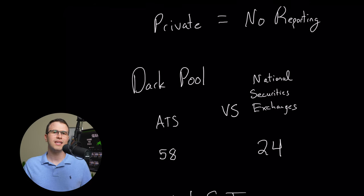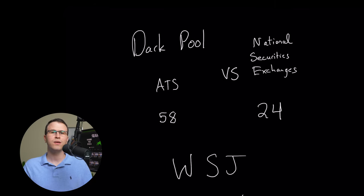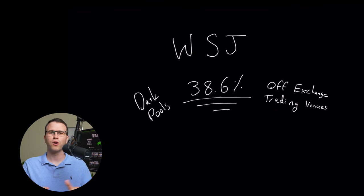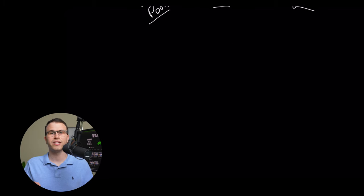Lastly, it also can be seen that dark pools are taking up activity potential away from the New York Stock Exchange, NASDAQ, and other exchanges. This potential is even quantifiable as we currently have 58 different alternate trading systems out there compared to only 24 national securities exchanges. On top of this, in May 2019, the Wall Street Journal reported that the percentage of U.S. stock trades executed on dark pools and other off-exchange trading venues rose to 38.6%. That's a lot of potential taken away from the other exchanges.